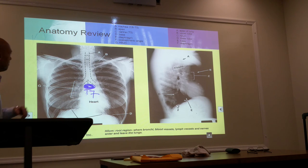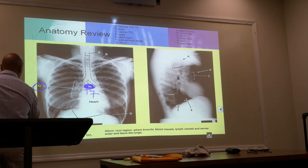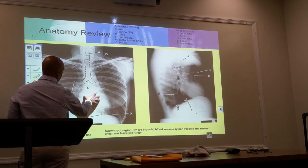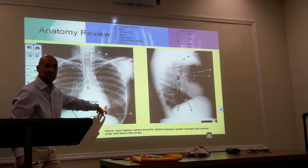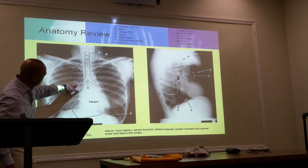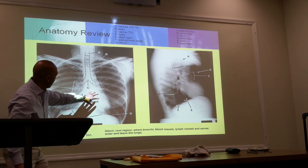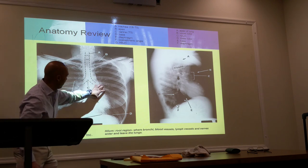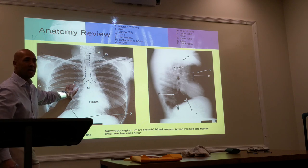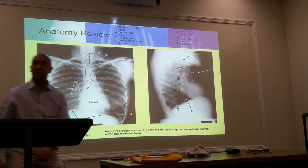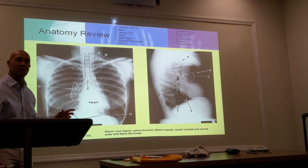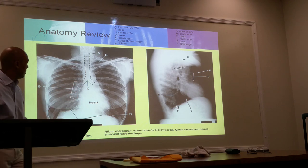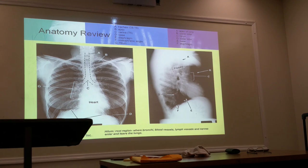A new term that I want you guys to be familiar with is the hilum. When we're looking at this x-ray, the heart is the obvious thick mass, so it's going to appear white on your radiograph. The apex is on the left side. You'll also see this area with some increased densities. This is known as the hilar region — H-I-L-A-R — or hilum. The hilum is the root region where the bronchi, blood vessels, lymph vessels, and nerve vessels enter and leave the lungs.